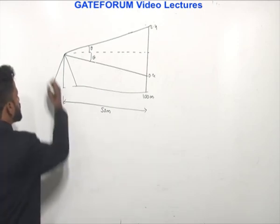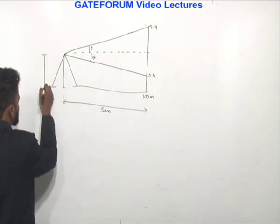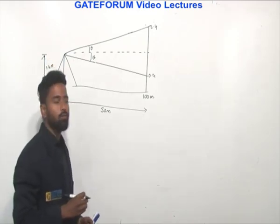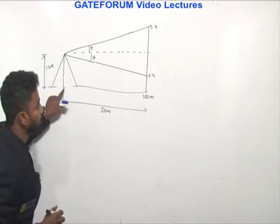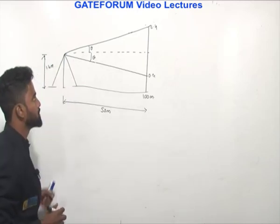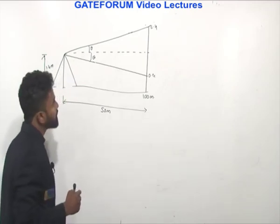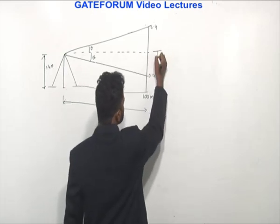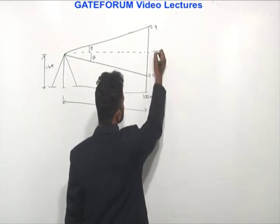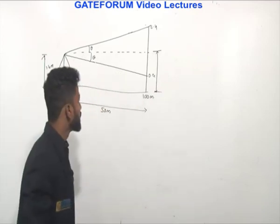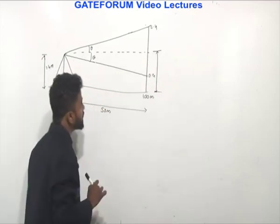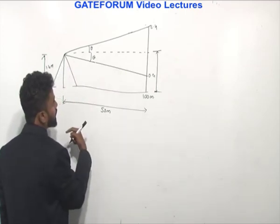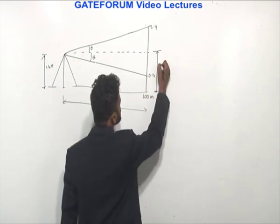The height of instrument is given as 1.4 meters. To calculate the RL of the theodolite station, I first require the height of the instrument above the benchmark datum. To find that intermediate distance, I will take the instrument axis height above the benchmark as x.